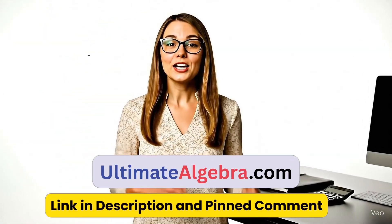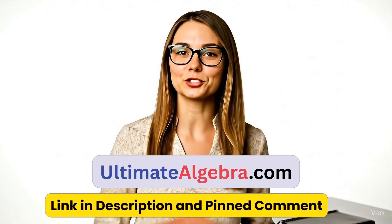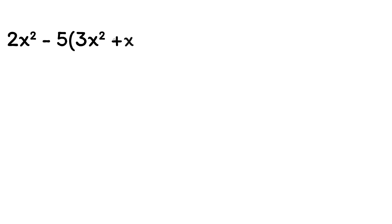Now you can see that the right answer comes from PEMDAS and algebra rules like distribution and combining like terms. If you're ready to master that mix and make all of algebra easy, check out our complete algebra course at ultimatealgebra.com. Let's do another example. Let's say we have 2x squared minus 5 times the quantity (3x squared plus x squared) plus 4. Again, to solve this question, we'll use PEMDAS.